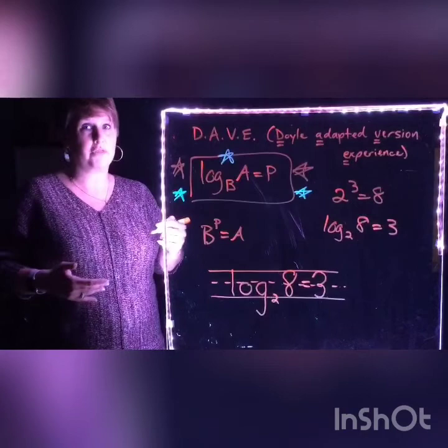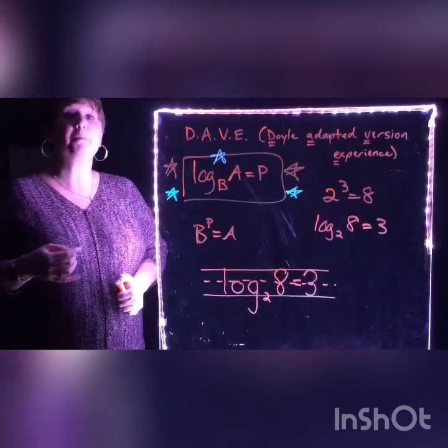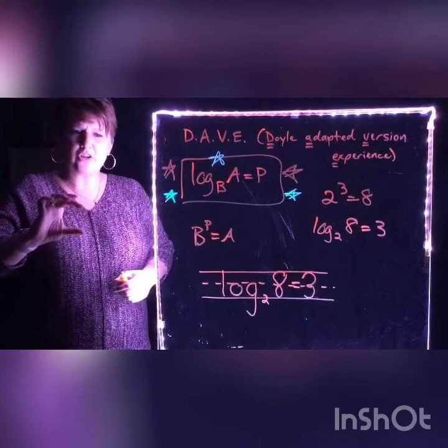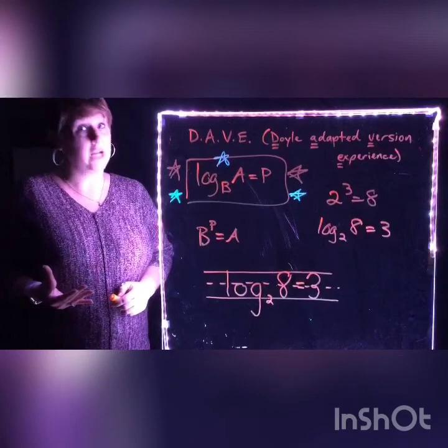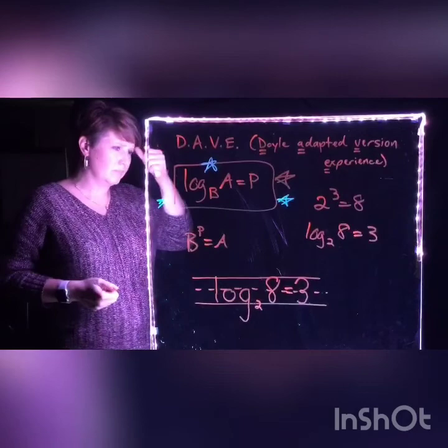Despite the fact that in exponential form, three is the exponent and tiny — in logarithmic form, it's not. Three is normal, sitting again on that flat line. Every time you write this, keep this in mind. What I see too often is people confusing themselves by letting the eight float up a little bit, pretending that the eight is the exponent for the two. I'm telling you right now: that eight is not the exponent for the two. The eight is the answer we are trying to achieve, and three is the exponent that will make that happen.